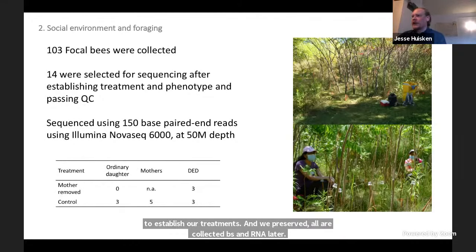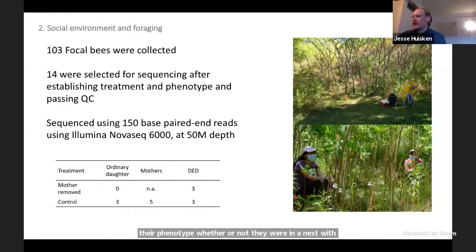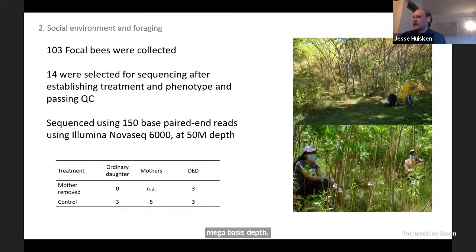One hundred three focal bees were collected and then 14 of these were selected for sequencing after having whole heads extracted for RNA and establishing their phenotype—whether or not they were in a nest with a mother absent or present. They were sequenced using 150 base pair-end reads using an Illumina NovaSeq 6000 at a minimum of 50 megabases depth. In total we had zero mother-removed ordinary daughters and three mother-removed dwarf eldest daughters, a control of ordinary daughters who forage with mother's presence, five mothers in total, and three dwarf eldest daughters with mothers present.